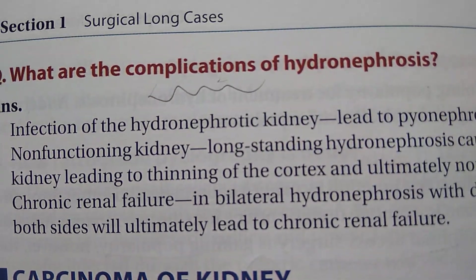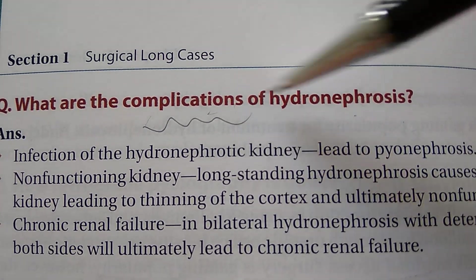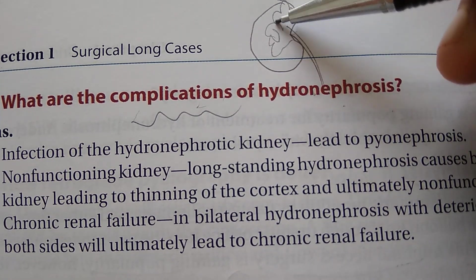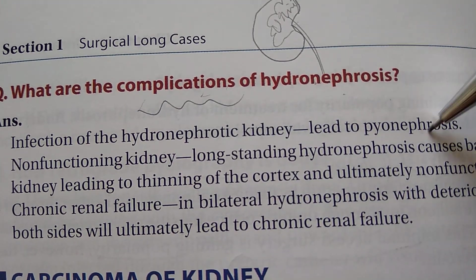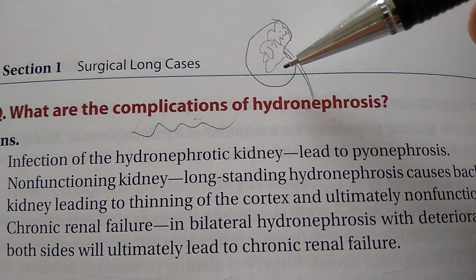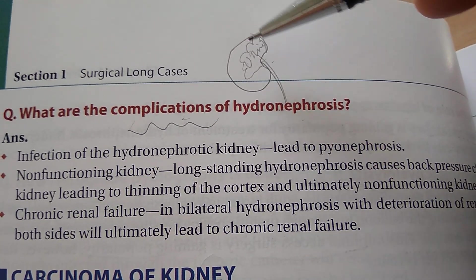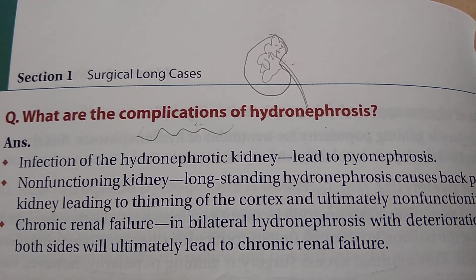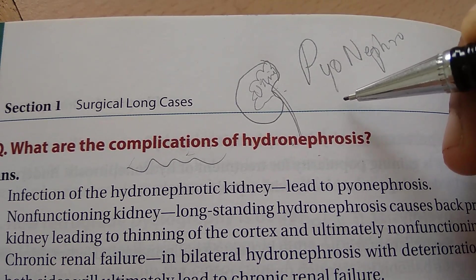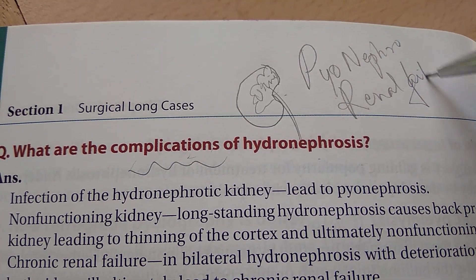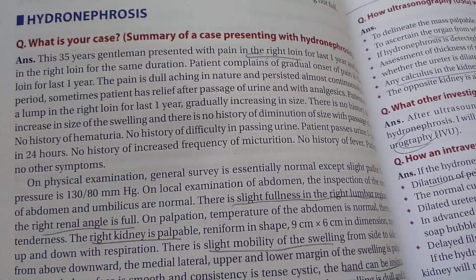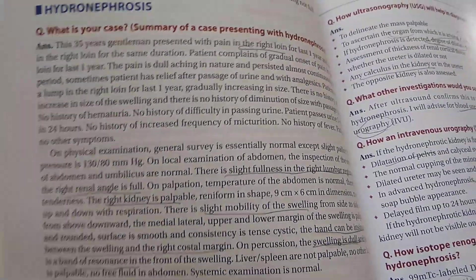Finally, the complications of hydronephrosis: with the pelvicalyceal system dilated and full of urine, infection can occur leading to pyonephrosis. The kidney can become non-functioning due to back pressure causing thinning of the cortex, and ultimately the kidney will stop working, leading to chronic renal failure. So the complications of hydronephrosis are pyonephrosis, non-functioning kidney, and renal failure.